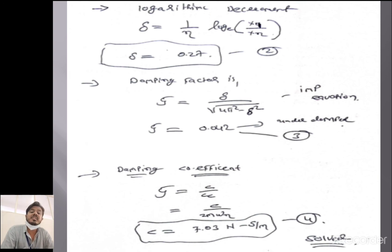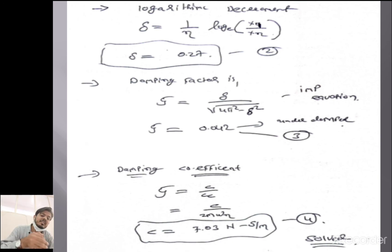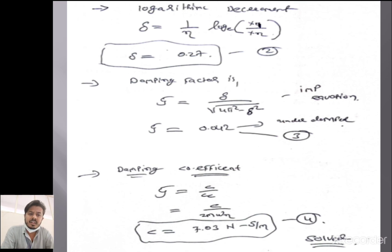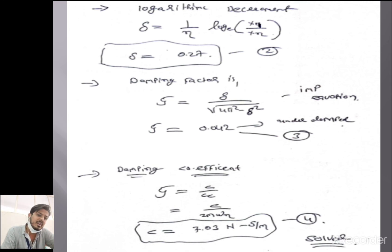This example may be asked for four marks or seven marks by determining one more parameter. This is a very important example. Please try to solve other examples based on this using reference books or any other platforms. If you have any doubts about this lecture, please write them down in the comment box. Thank you so much for attending today's lecture.